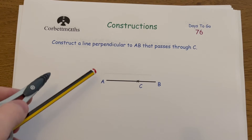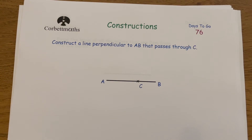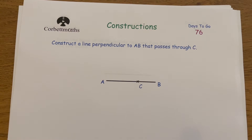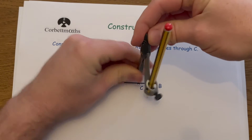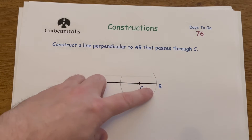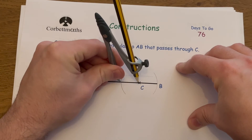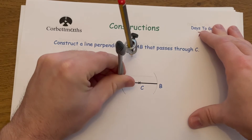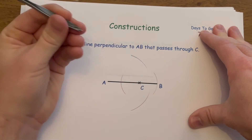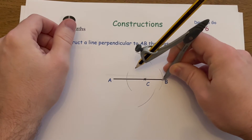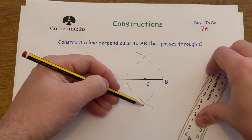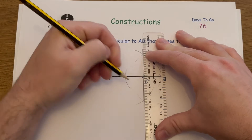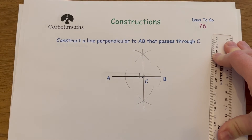The next construction is also to construct a line perpendicular to AB passing through point C, but C is on the line. Draw two arcs on the line equally spaced from C — one through B and one on the other side. Then, placing the compass on each arc-line intersection, draw arcs above and below the line, keeping the compass the same size. Draw a straight line through where the top and bottom arcs intersect and through point C — that line is at right angles to AB and passes through C.